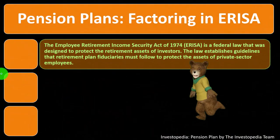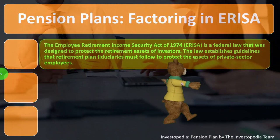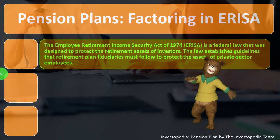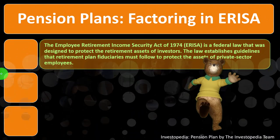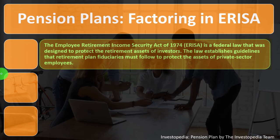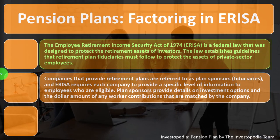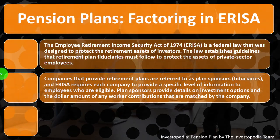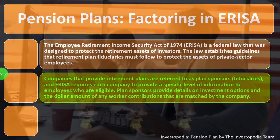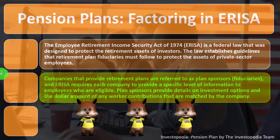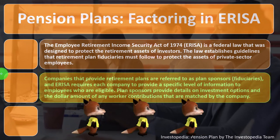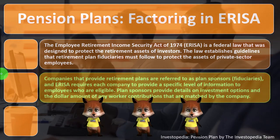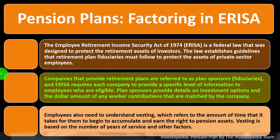A company might want employees invested in company stock to motivate performance, but this creates dangerous lack of diversification. If the company fails, employees lose both their salary and their entire retirement plan. This led to regulations and ERISA requirements. Companies providing retirement plans are called plan sponsors and fiduciaries — ERISA requires each to provide specific information to eligible employees, including investment options and matched contribution amounts.